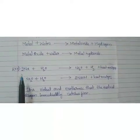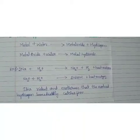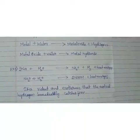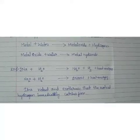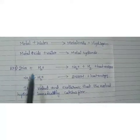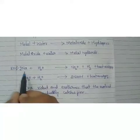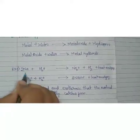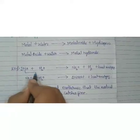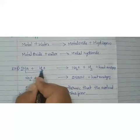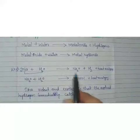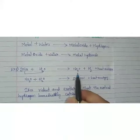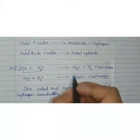Let us take one example: sodium. Sodium is a metal and it is a highly reactive metal. Sodium, potassium, and lithium are highly reactive metals, as we studied in the previous class. When sodium reacts with water, sodium reacts with the oxygen present in the water and it becomes Na₂O, which is sodium oxide. The hydrogen gas is removed.